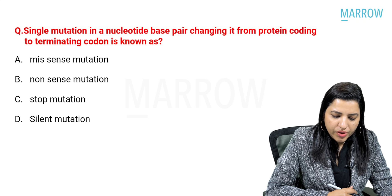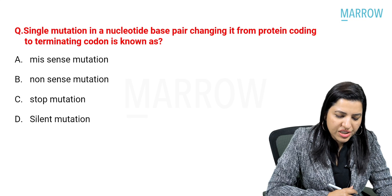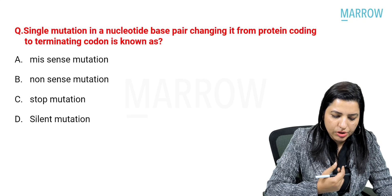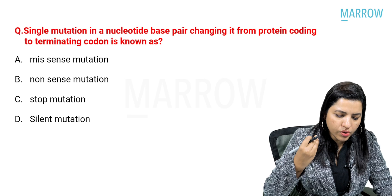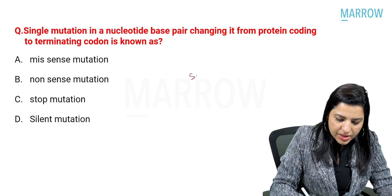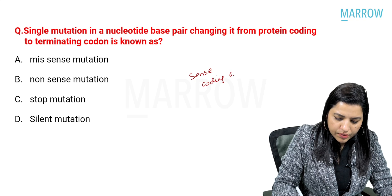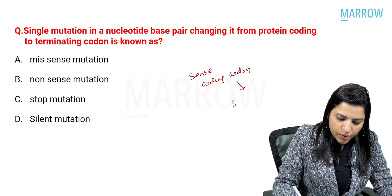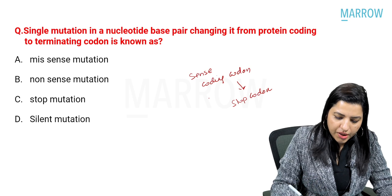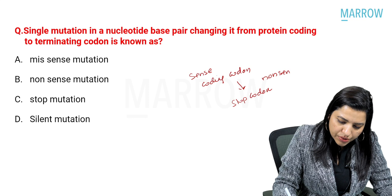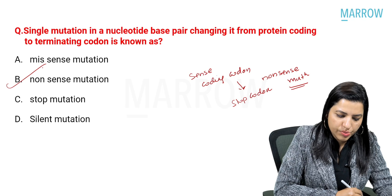A single mutation in a nucleotide base pair changing it from a protein-coding codon to a terminator codon — it is a single base mutation converting a sense codon (coding codon) to a stop codon. What is this called? It is called a nonsense mutation. The answer is nonsense mutation.